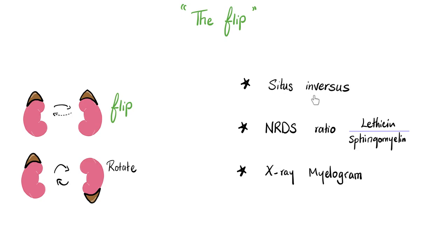Other flips in medicine: situs inversus, where visceral organs are inverted — liver on the left, spleen on the right, cardiac apex possibly on the right. Also, the lecithin-to-sphingomyelin ratio: normally lecithin should be greater than sphingomyelin, with a ratio of 2 or more. But without surfactant, this ratio can drop to 1 or less — another flip — which could indicate respiratory distress syndrome.